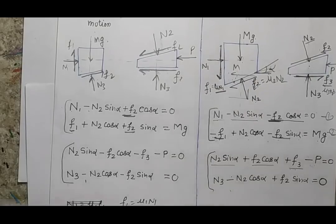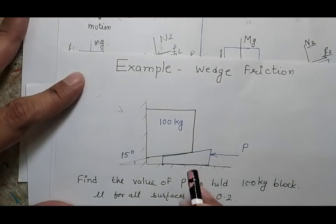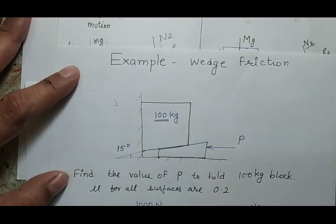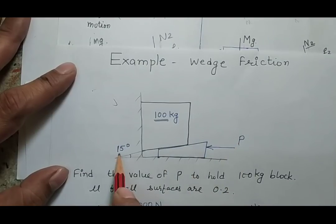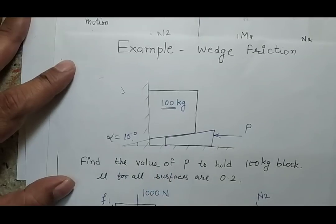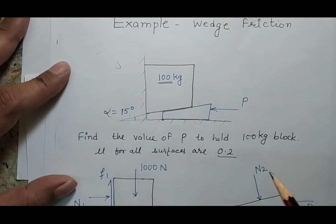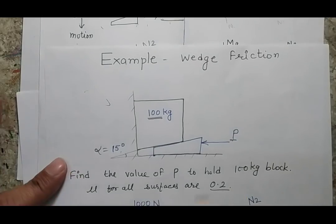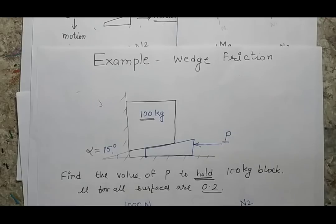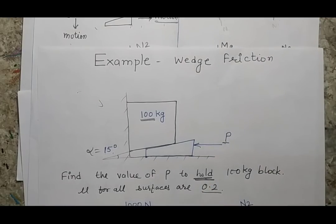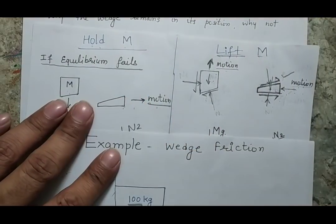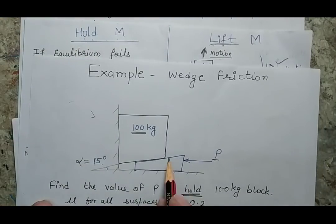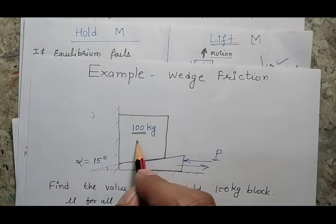Now let's quickly solve one example. There is a body of 100 kilograms, I am applying a force P, the body is in equilibrium, the angle alpha is 15 degrees, and the coefficient of friction at all surfaces is 0.2. What would be the value of P so that the system remains in this position? This is the holding case — if the equilibrium fails, the body will fall down and the wedge will move in the rightward direction.